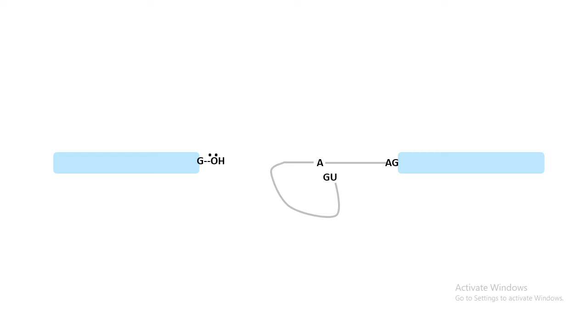As a result, the GU would be forming a lariat-like structure and exposing the OH group of the 5 prime splice site. This OH group can further work like a new nucleophile and it would attack again the 3 prime splice site. After that, the second transesterification reaction occurs. As a result, the lariat would be removed and the exons would be rejoined.